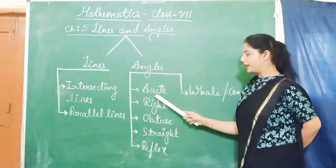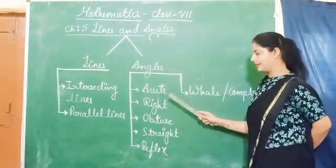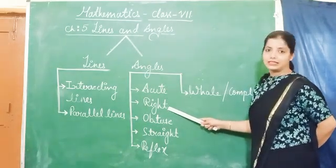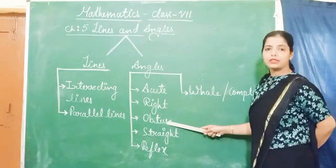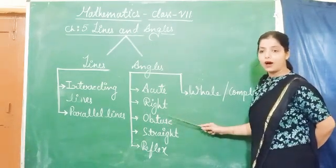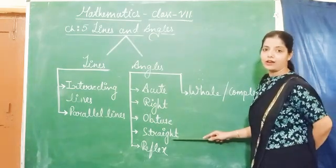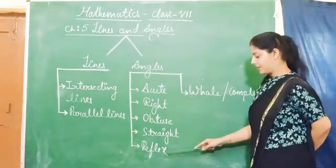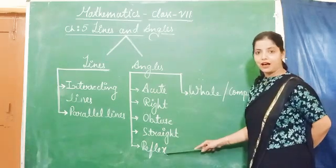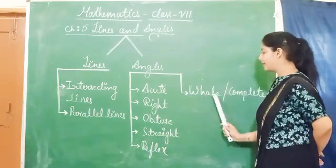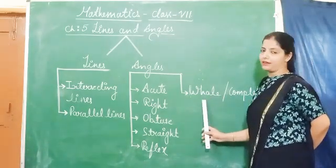Angles: Acute angle, which is greater than 0 degrees and less than 90 degrees. Right angle is exactly 90 degrees. Obtuse angle, more than 90 degrees and less than 180 degrees. Straight angle is exactly 180 degrees. Reflex angle, more than 180 degrees and less than 360 degrees. Whole angle or complete angle is exactly 360 degrees.